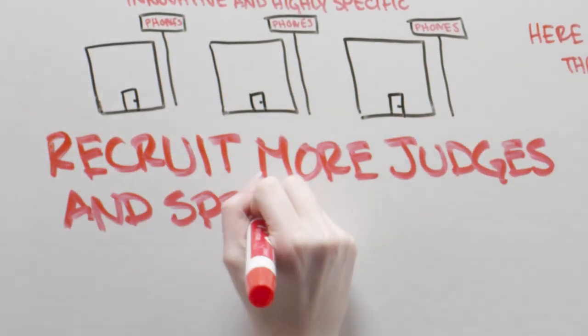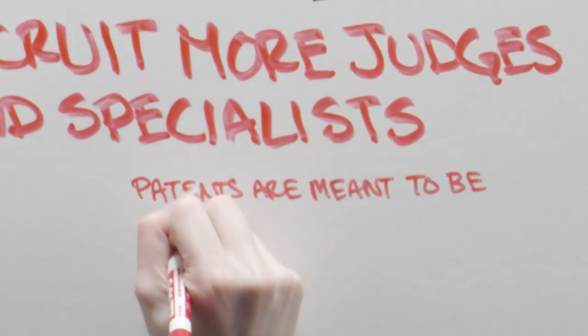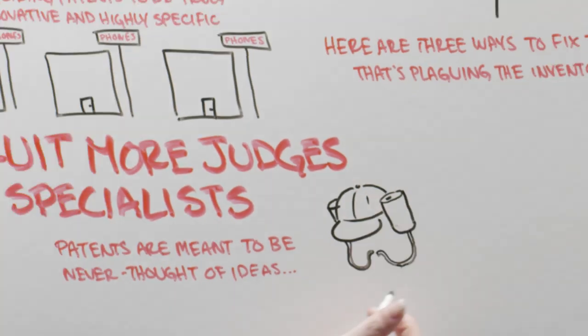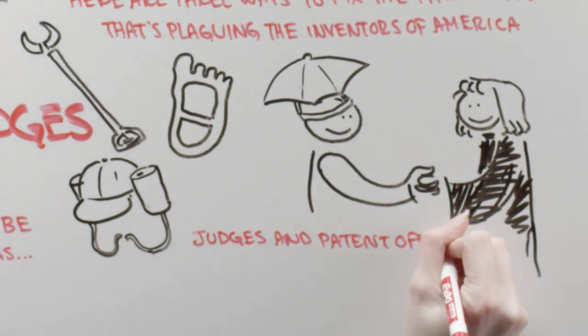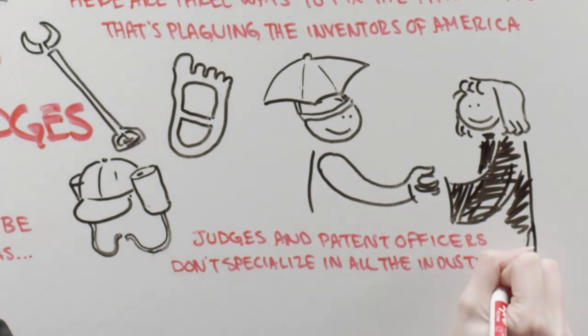Recruit more judges and specialists. Patents are meant to be never thought of ideas. But oftentimes, less than clever things get through the cracks because judges and patent officers don't specialize in all the industries that inventors do.